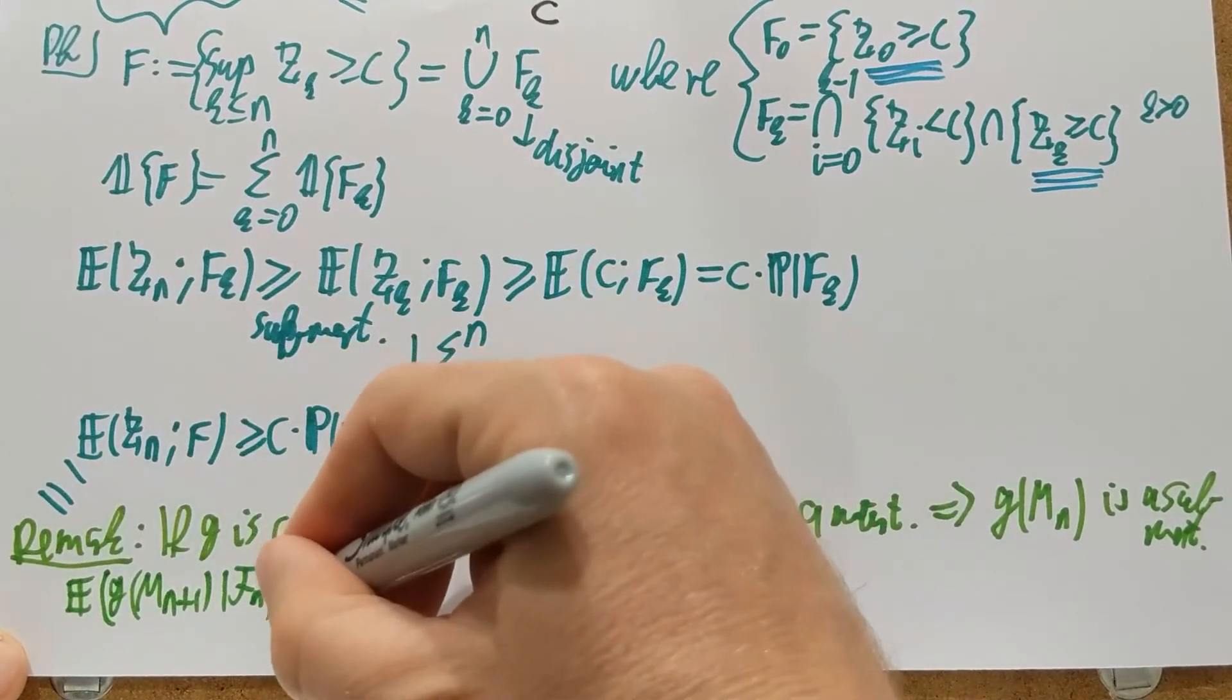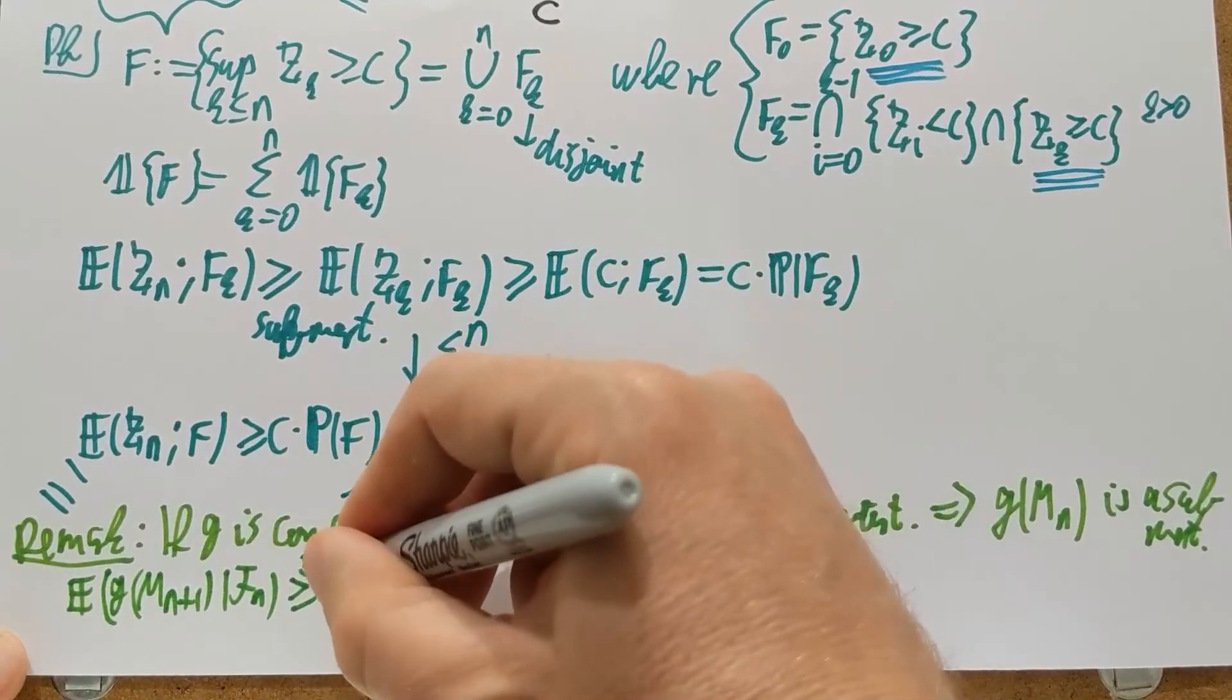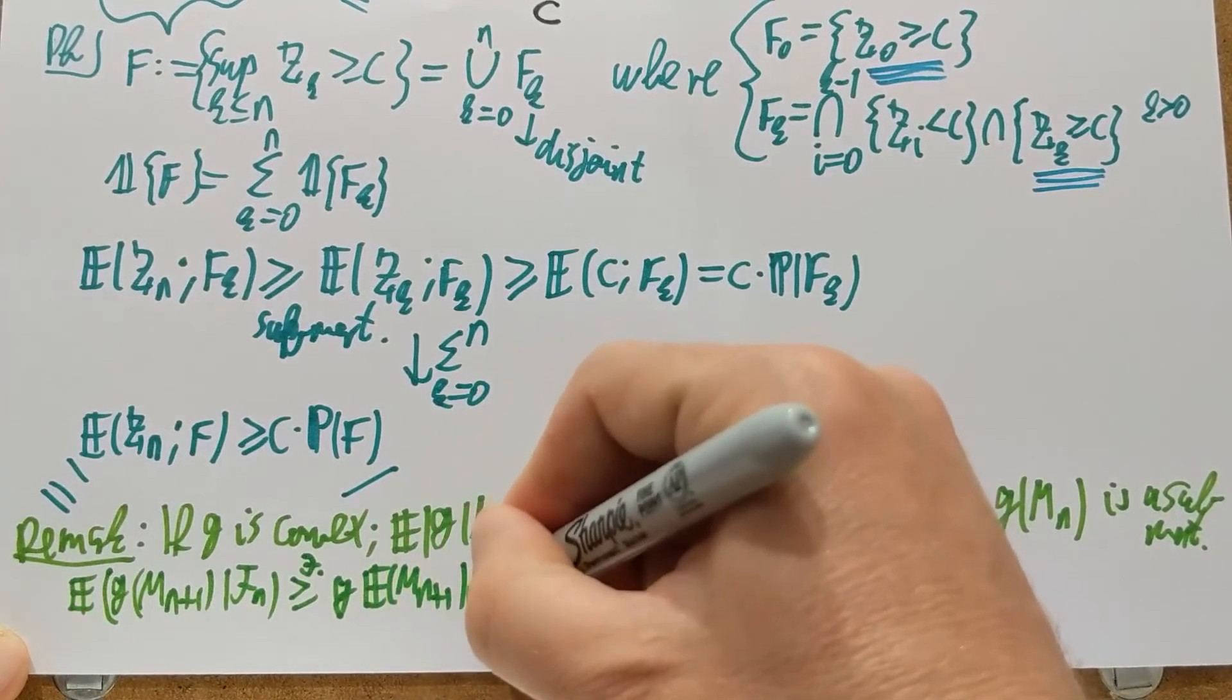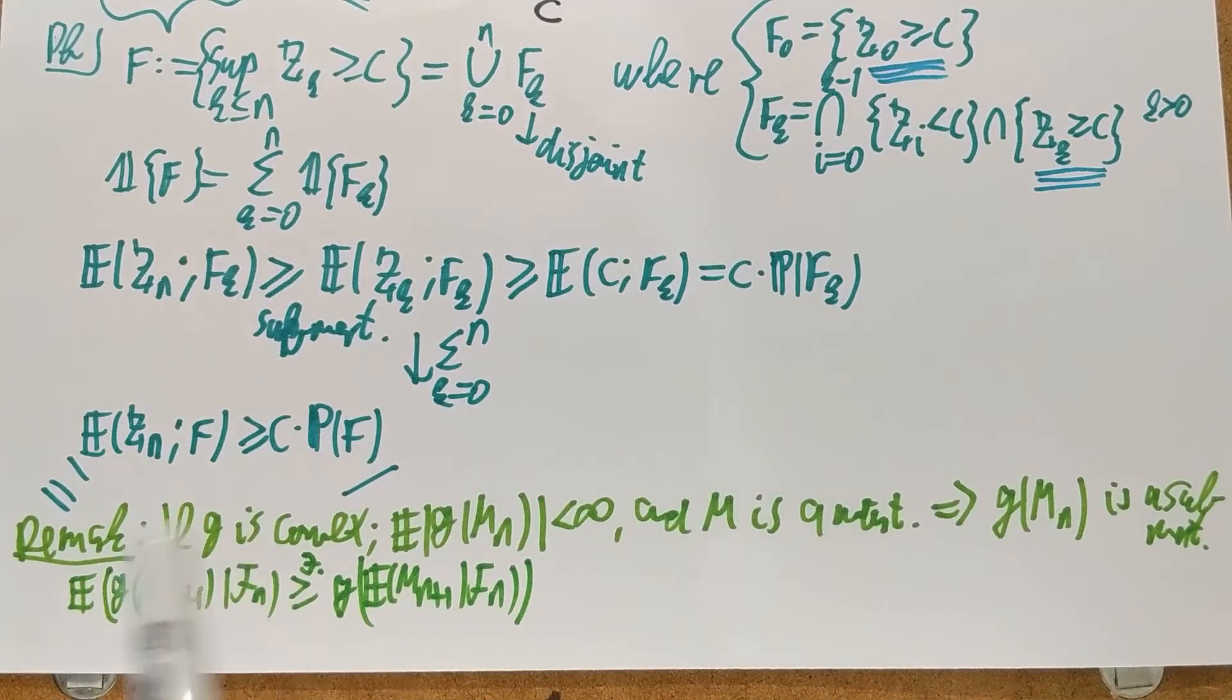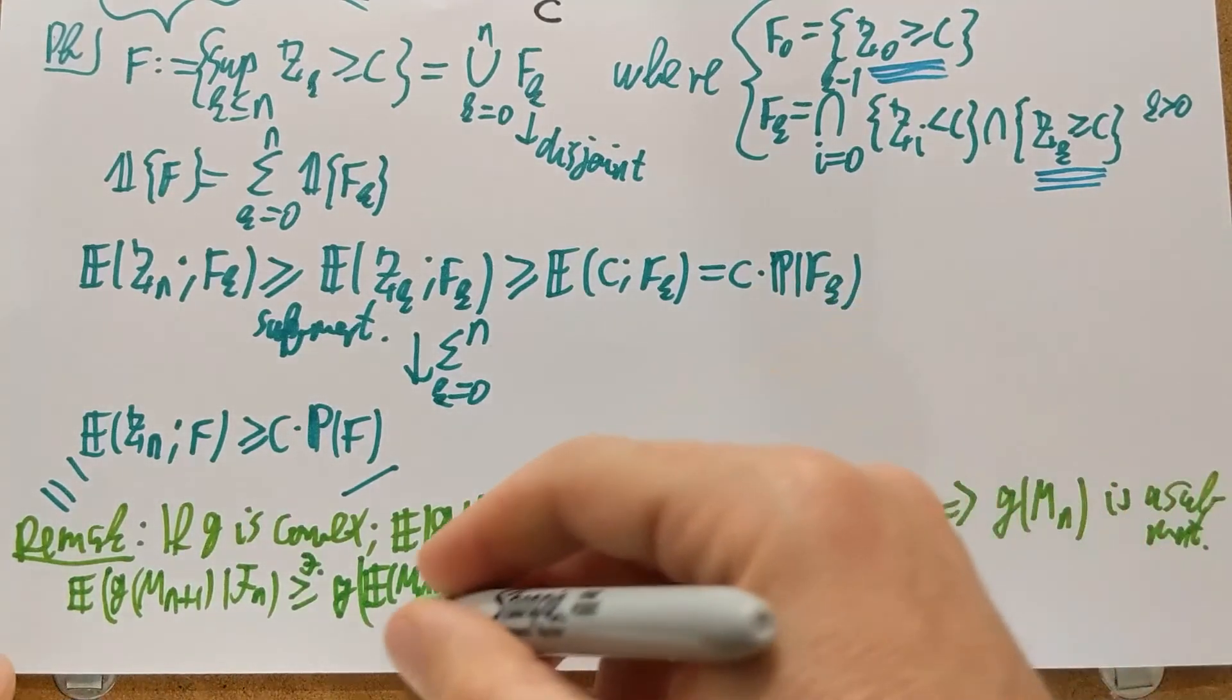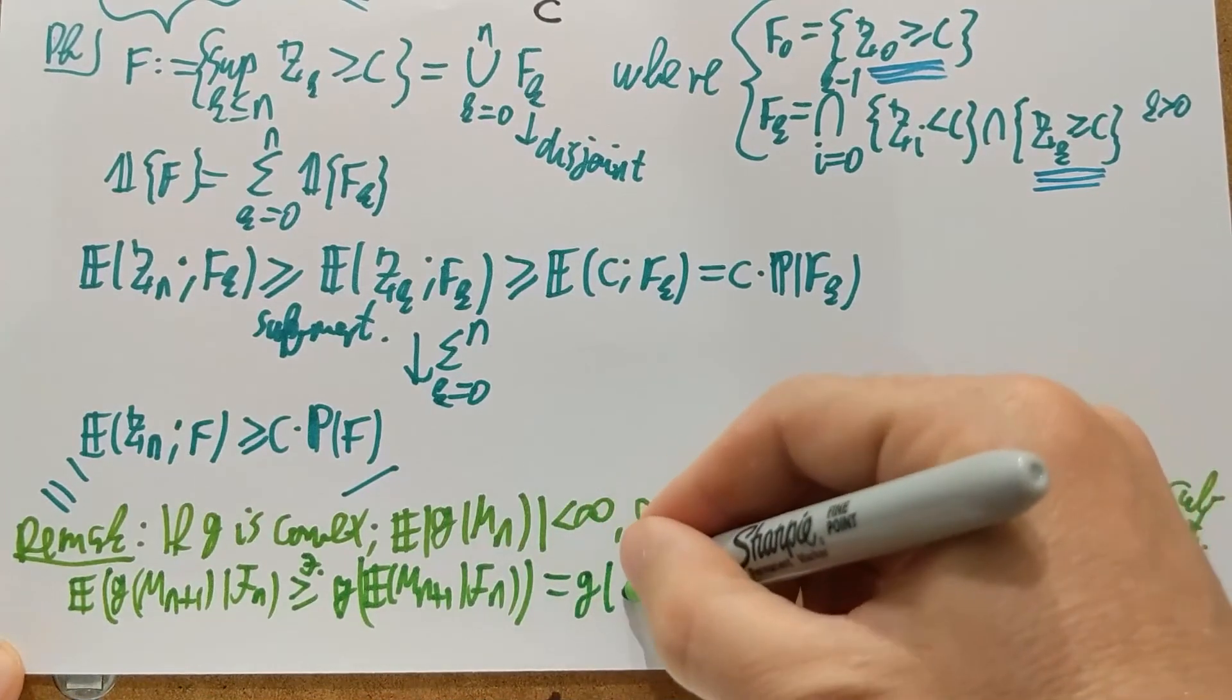So if you look at the expectation of G of M_{n+1} given F_n, Jensen's inequality tells you that this is larger than or equal to G of the conditional expectation. That's just Jensen's inequality on conditional expectation. So expectation of a convex function is larger than or equal to the convex function of the expectation. But then M was a martingale, so that's just by definition G of M_n.